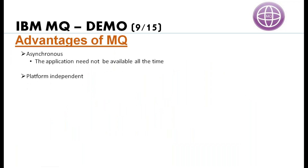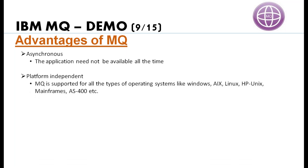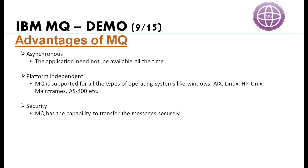The second advantage is platform independence. IBM MQ is platform independent — it can support all kinds of operating systems like Windows, AIX, Linux, HP-UX, Mainframe, AS400, Sun Solaris, and more. Next is security. IBM MQ has the capability for safe and secure transport of messages. In banking, which deals with money, security matters a lot, especially in financial domains. MQ has the capability for a safer transport of your money over the network. Security is implemented through various algorithms, which we will discuss in our security session. MQ can also transfer messages securely through various algorithms covered in future classes.